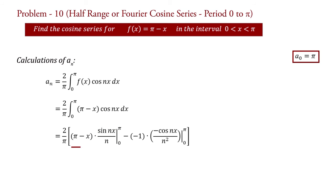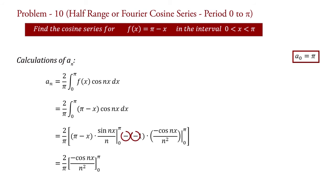In the first term, putting the value of limits we obtain sin(nπ) and sin(0), which are both 0. Therefore this entire first term becomes 0. So aₙ equal to 2 upon pi into bracket, and with the minus minus giving plus, we have minus cos(nx) upon n² with limit 0 to pi.